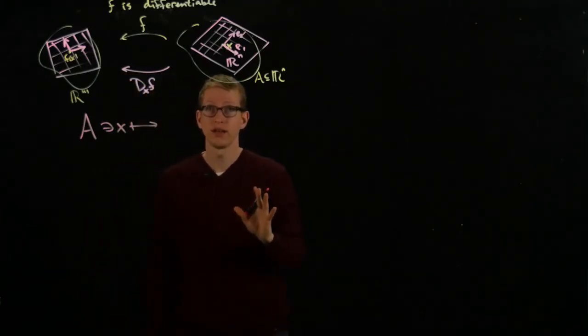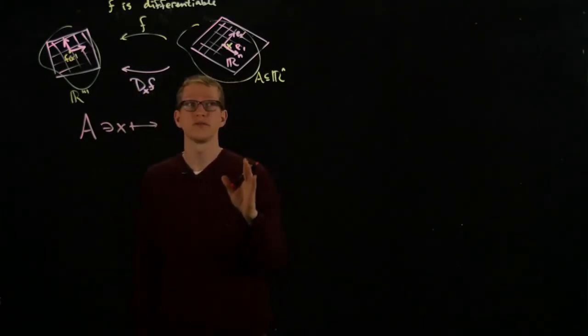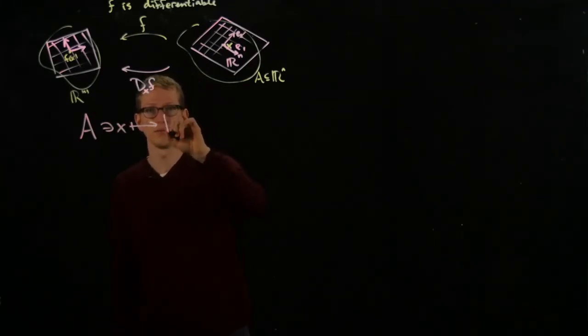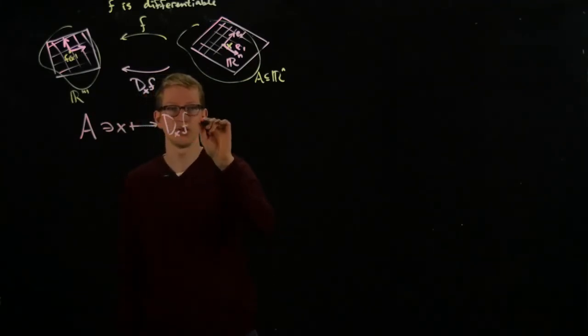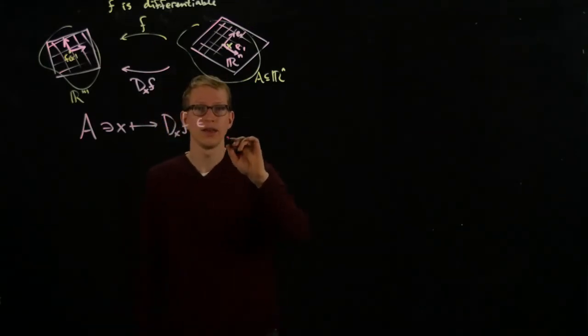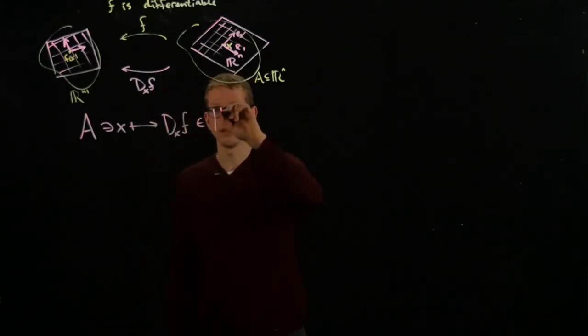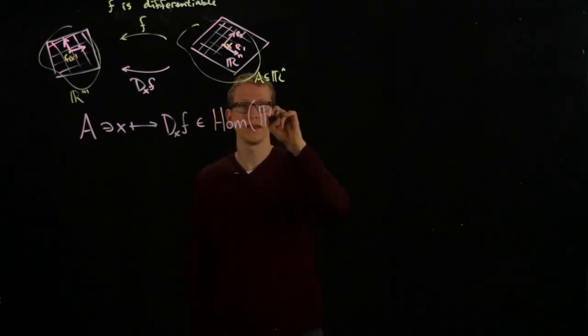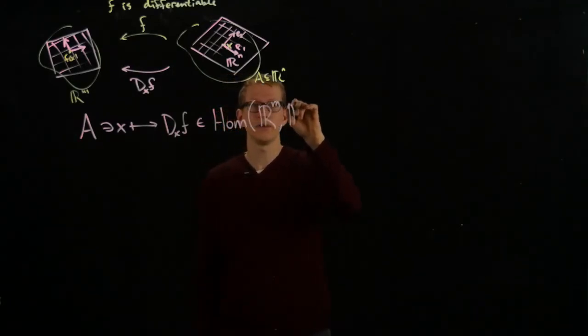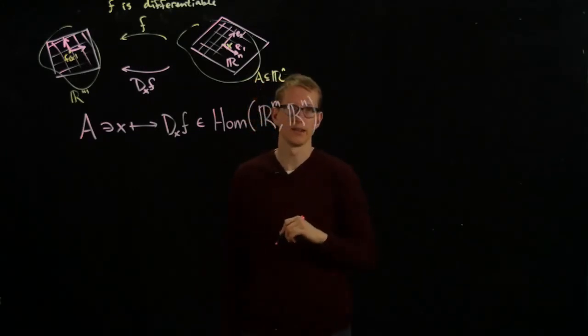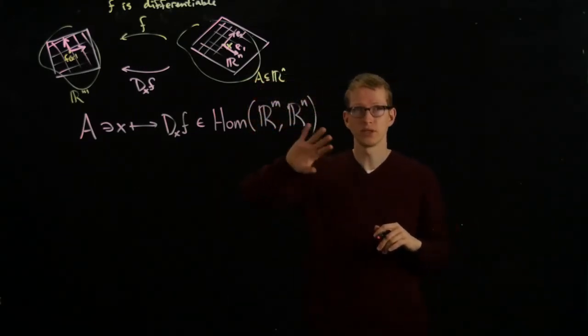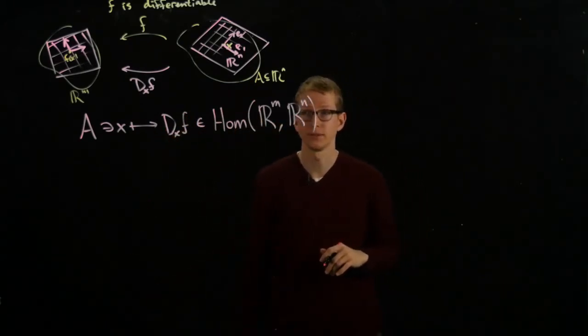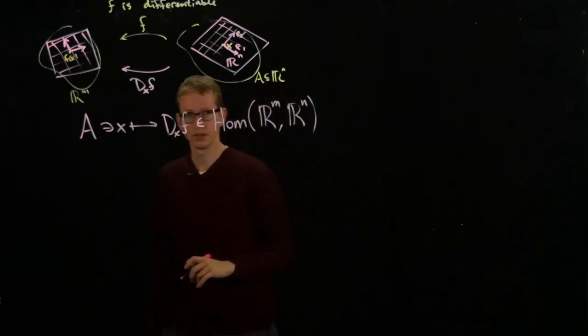I will get a linear transformation from R^n to R^m. So we get some linear transformation, which is linear, and to emphasize linear, we write this as Hom. And the target is R^m, and the domain is R^n. The reason we write the domain on the right is because we'll be thinking of arrows as going from right to left.